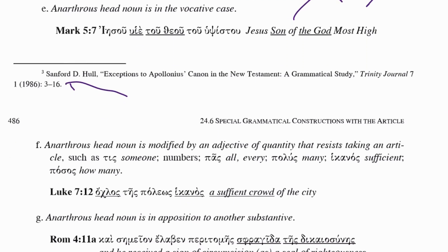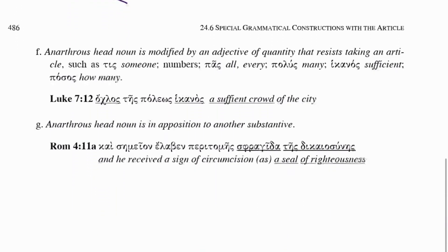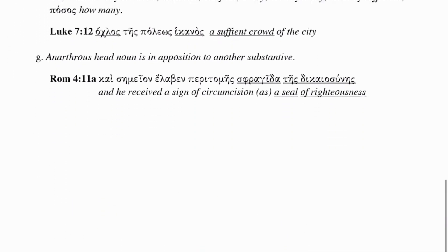Another instance is when the anarthrous head noun is in the vocative case. The vocative case does not have an article — there is no article for the vocative case. So of course you're going to have discordancy between the head noun and the genitive modifier, because there is no article for the vocative case. That's easily explained.